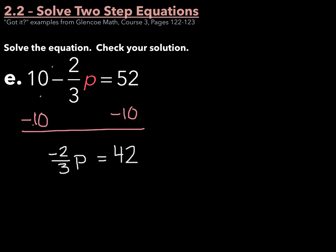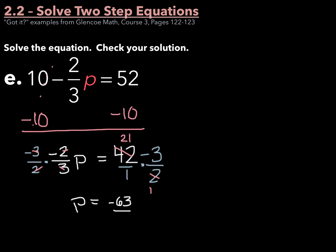What we're left with is negative two-thirds p equals 52 minus 10, which is 42. Next, multiply by the reciprocal of negative two-thirds, which is negative three-halves, on both sides of the equation. This cancels out nicely so I'm left with p equals — before you multiply, look to cross-simplify. I can divide 2 from 42 to get 21 and 1. So 21 times negative 3 is negative 63 over 1, and p simply equals negative 63.